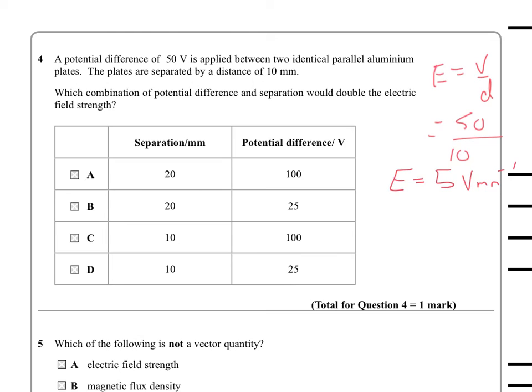So that'll give us an E strength of like 5 volts per millimeter. So it says we're interested here in something that would double the electric field strength, so we're looking for a combination in amongst these results here that gives us 10 volts per millimeter. So 100 over 20, that's going to give us 5 again. 25 over 20 is like 1 and a quarter. 100 over 10 is going to give us the value we're looking for, and again this value here is 2 and a half. So the correct answer here is C.